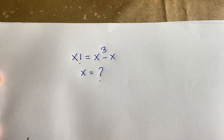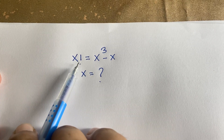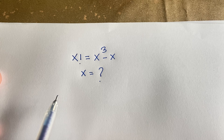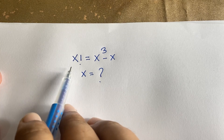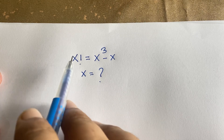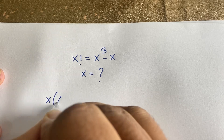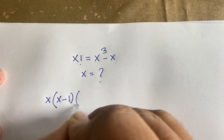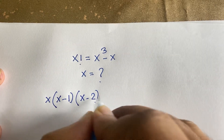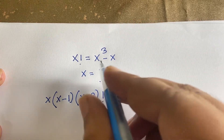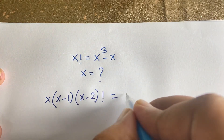So first of all, here is x factorial. We know that n factorial will be n times n minus 1, n minus 2, n minus 3 factorial. So according to these rules, x factorial will be x times x minus 1, x minus 2 factorial, is equal to x cube minus x.